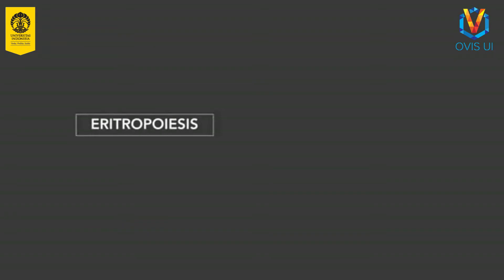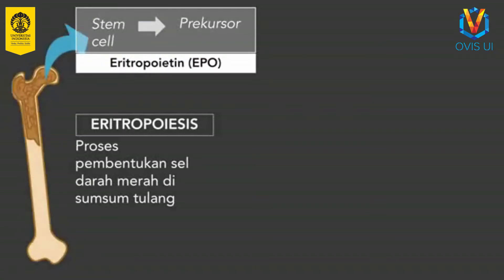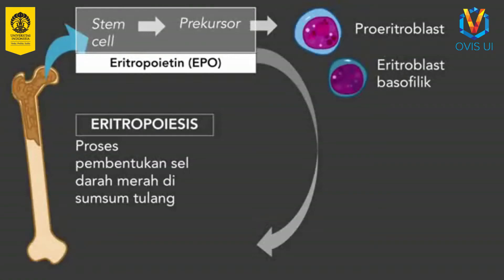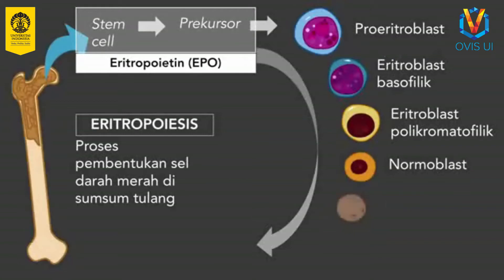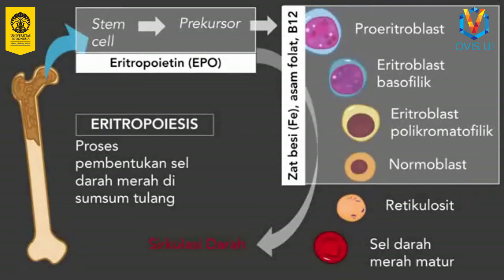Sebelum kita membahas lebih lanjut mengenai anemia, kita akan melihat sekilas mengenai eritropoiesis, yaitu proses pembentukan sel darah merah di sumsum tulang. Pada sumsum tulang terdapat stem cell atau sel punca, yaitu sel-sel yang memiliki kemampuan membelah tak terhingga dan dapat berdiferensiasi menjadi berbagai sel. Sebagian sel punca di sumsum tulang akan berdiferensiasi menjadi prekursor sel darah merah, proses ini dipengaruhi oleh eritropoietin atau EPO yaitu suatu hormon yang dihasilkan di ginjal. Prekursor sel darah merah kemudian akan menjadi proeritroblast, yang akan menjadi eritroblast basofilik, polikromatofilik, normoblast, dan retikulosit atau sel darah merah muda. Retikulosit lalu akan berubah menjadi sel darah merah matur yang dilepaskan ke dalam sirkulasi.